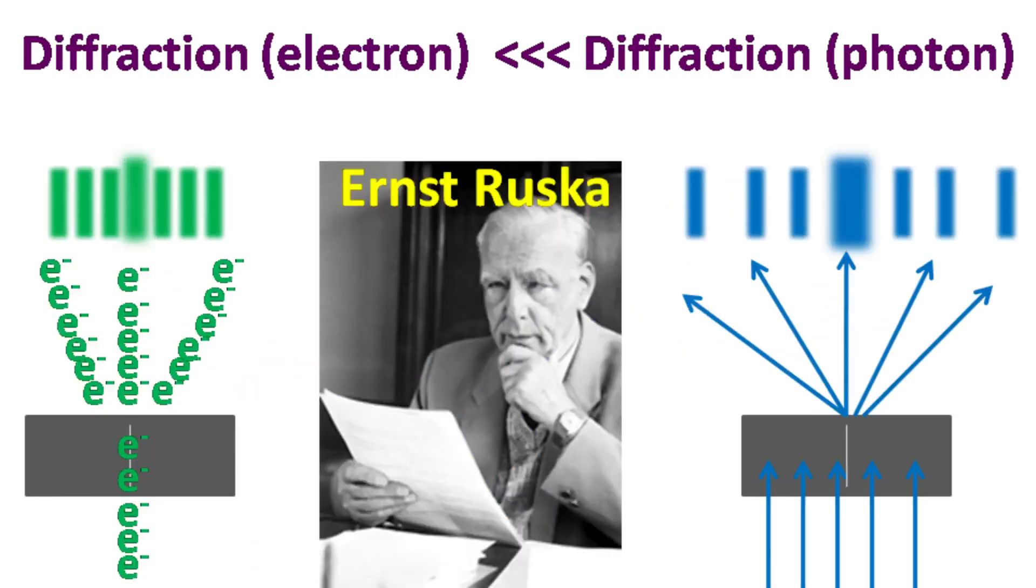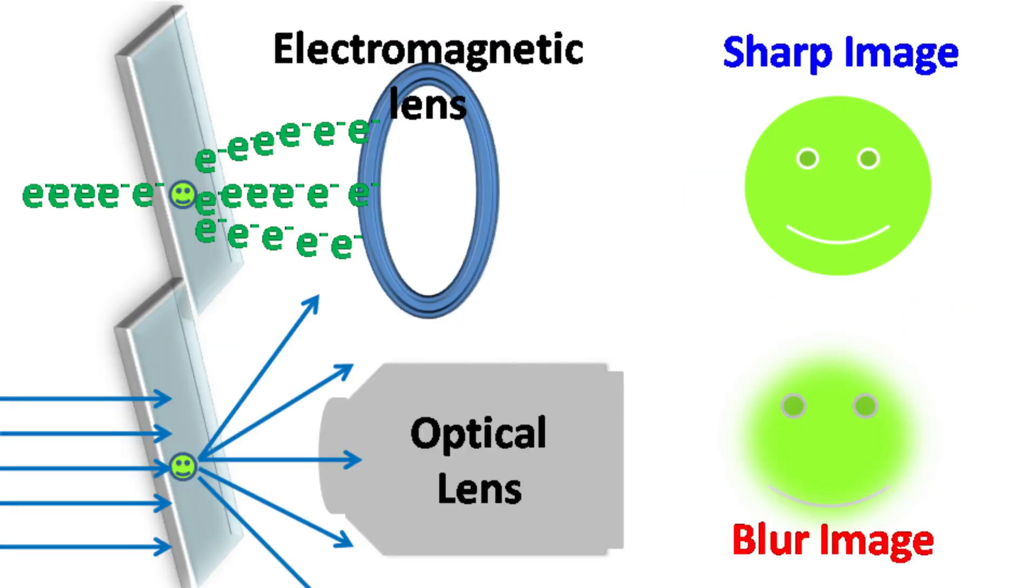Ernest Rusca realized this in the year 1933 and invented the first electron microscope. When the electron beam behaving as a wave hits the tiny specimen, it does suffer diffraction. However, the diffraction is less as compared to light of photons. As the diffraction is less, this can be easily collected by magnetic lenses to give rise to clear, sharp image of the specimen.